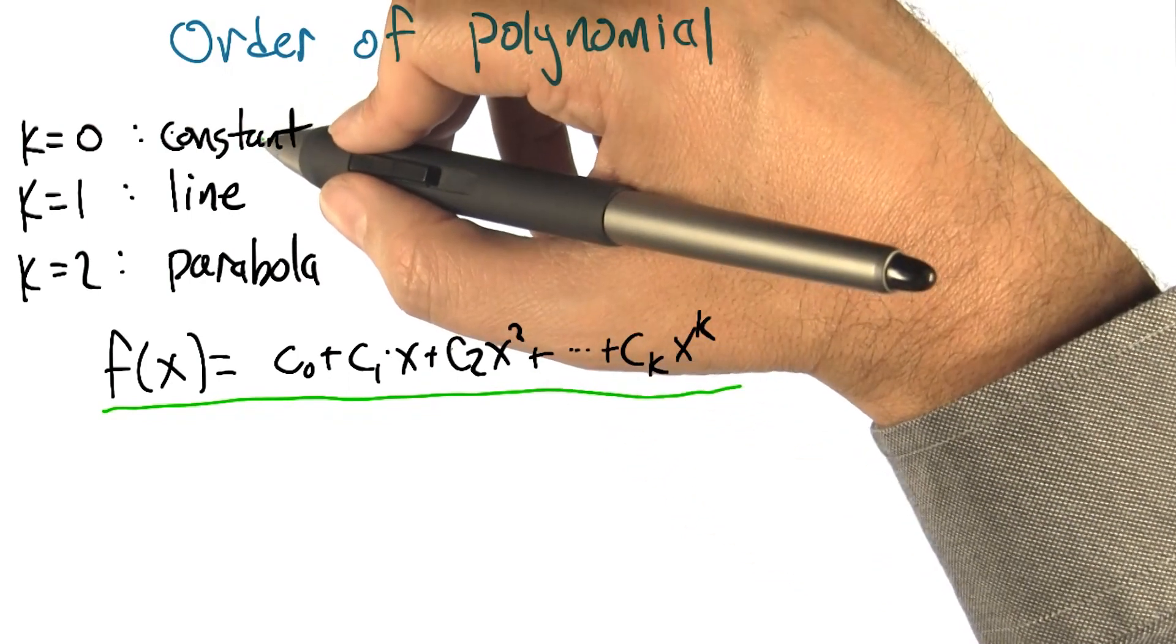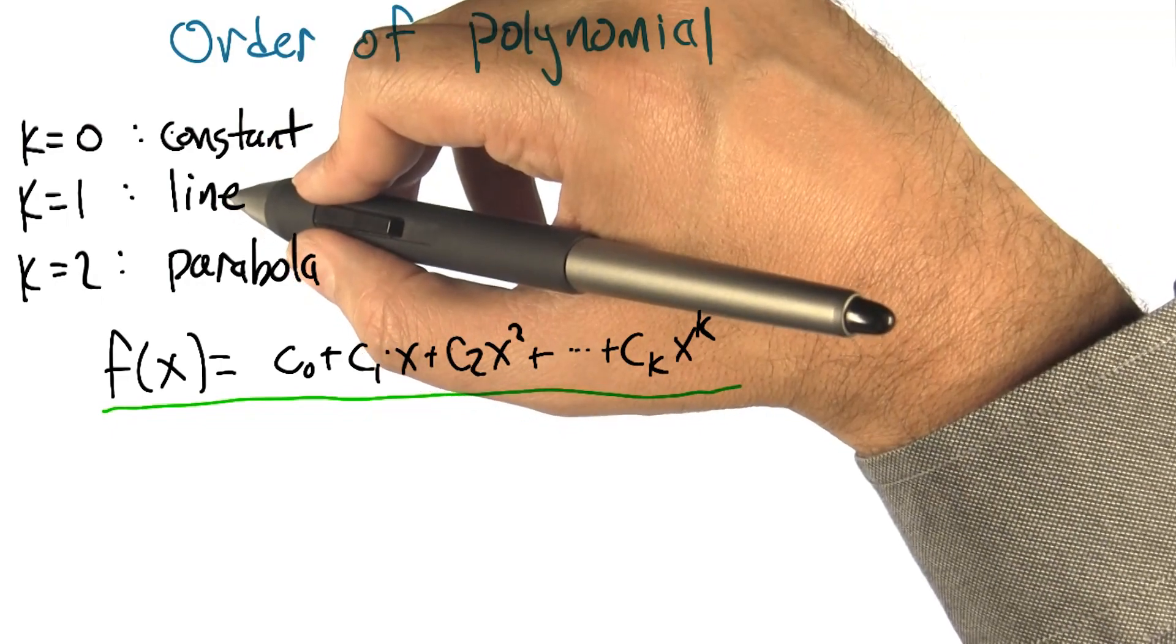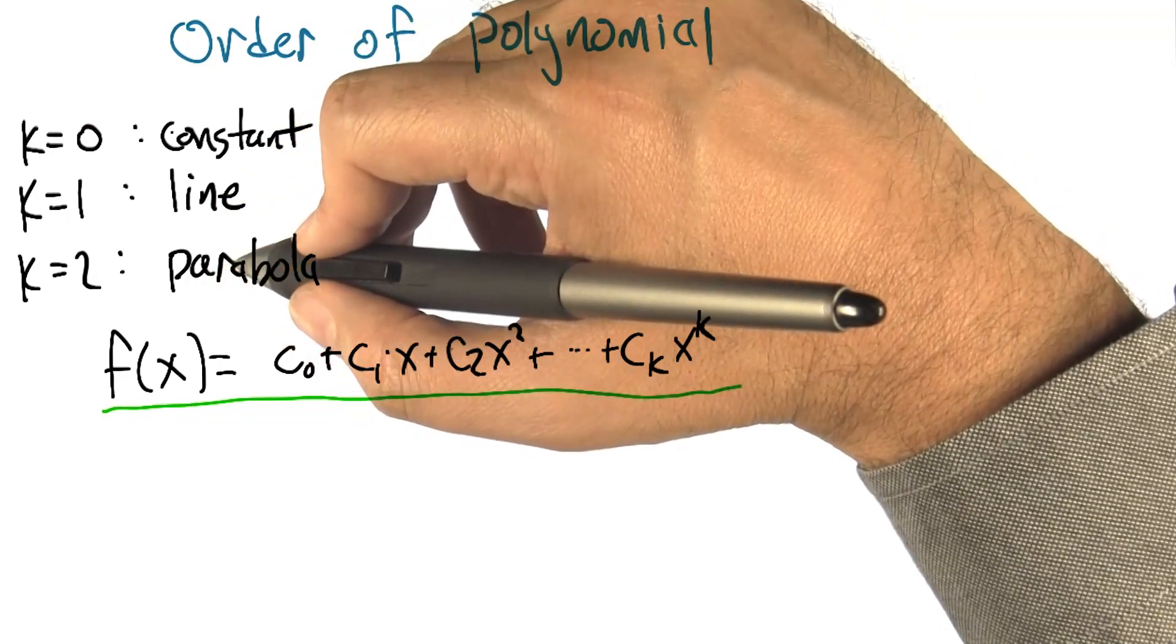And we've talked about k equals 0, the constant function, and k equals 1, the line, but there's also k equals 2, a parabola.